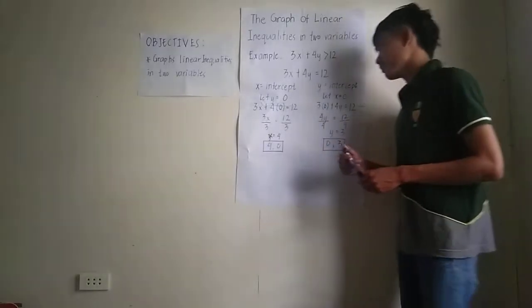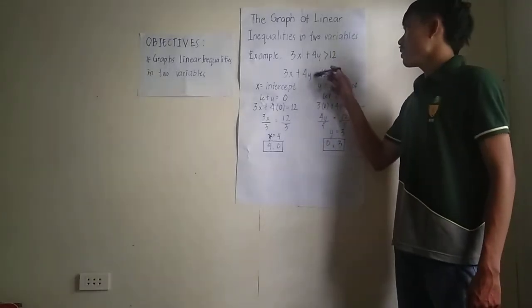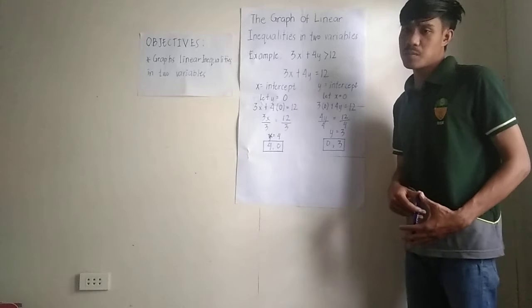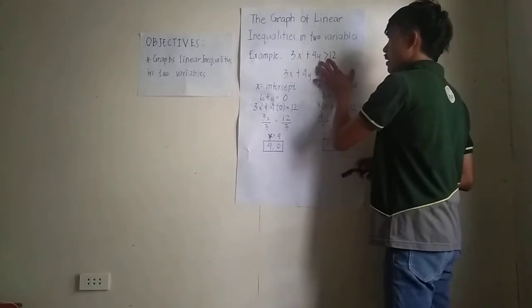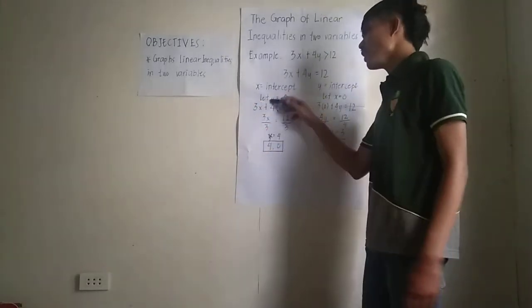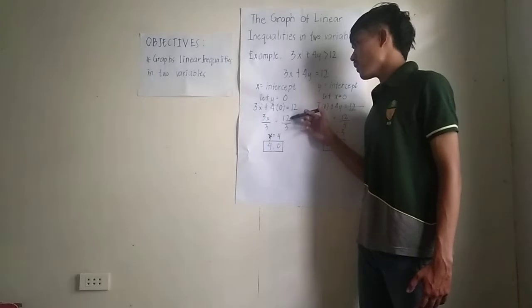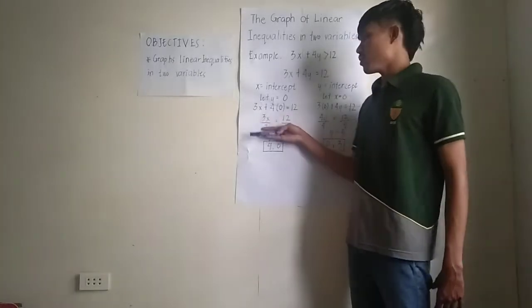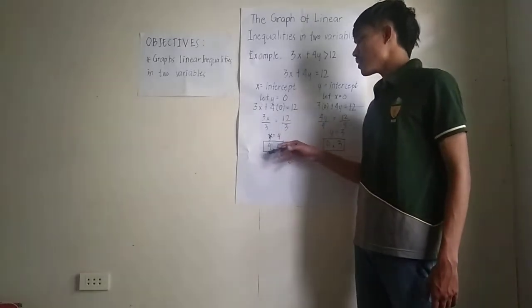Our example is 3x + 4y > 12. In linear inequalities, we first treat it as a line equation to get the x and y intercepts. So 3x + 4y > 12 becomes 3x + 4y = 12. To get the x-intercept, let y = 0. So 3x + 4(0) = 12, which gives us 3x = 12. Dividing both sides by 3, x = 4. So our x-intercept is (4, 0).